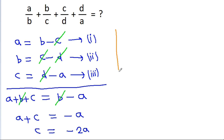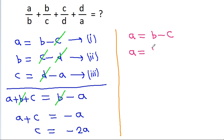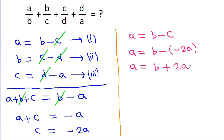Now, equation 1 is a is equal to b minus c, and substituting c as minus 2a, we get a is equal to b plus 2a, or b is equal to a minus 2a, which will be minus a.